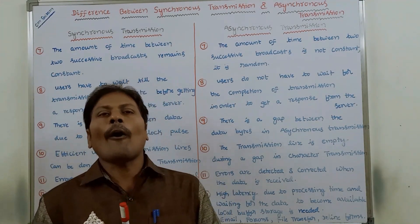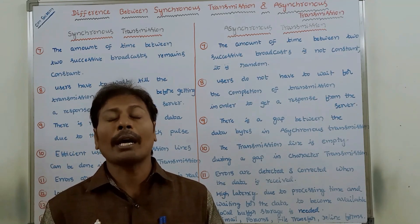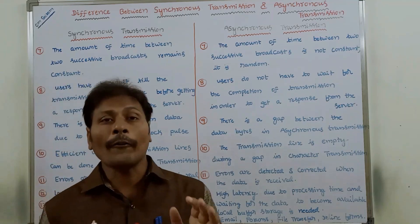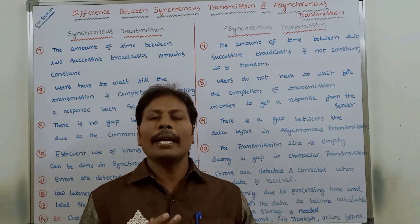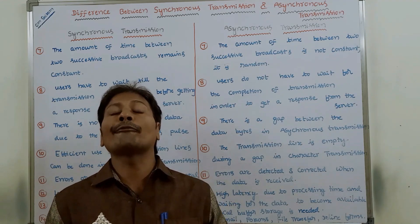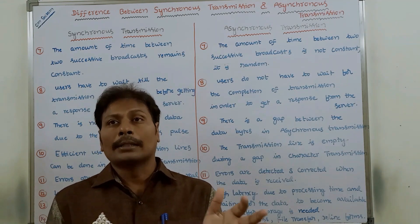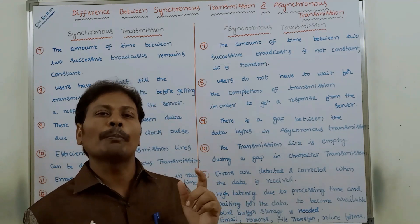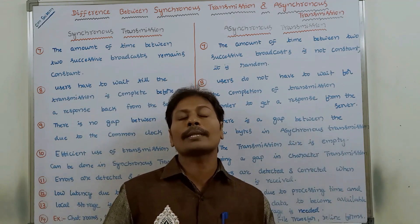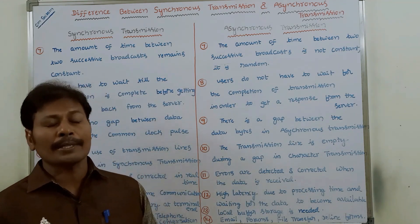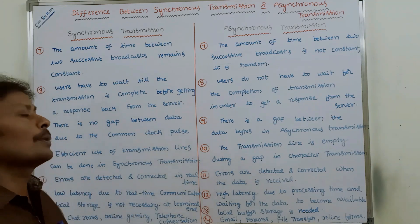Next: in the case of synchronous transmission, there is no gap between the data frames or data blocks. Whereas in the case of asynchronous transmission, there is a gap between two data bytes. The data is transferred in the form of bytes in asynchronous transmission, and two data bytes are separated by some gap. In synchronous transmission, there is no gap between two data blocks or frames due to the common clock pulse.